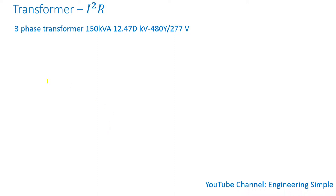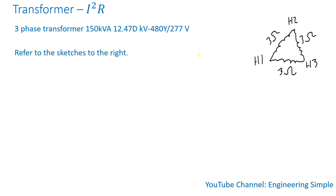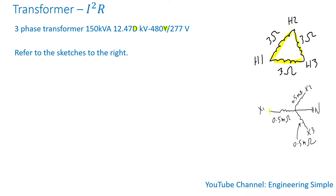Let's assume we have a three-phase transformer rated 150 kVA. The primary side is 12.47 kV connected as a delta, and the secondary side is 480 volts connected as a Y. Referring to the sketches on the right: the primary delta winding has a phase resistance of 3 ohms, and the secondary Y winding has a phase resistance of 0.5 milliohms.